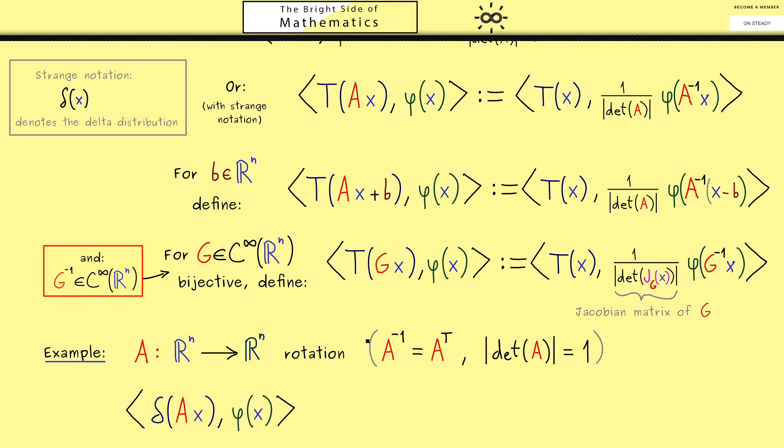Therefore in the next step let's calculate the new distribution delta after A. Now by the simplified formula this is delta applied to this test function. Therefore by the definition of the delta distribution we know we have to evaluate this test function at 0. However there you see A inverse of 0 is still 0. So we have φ of 0.